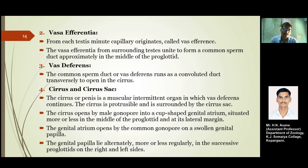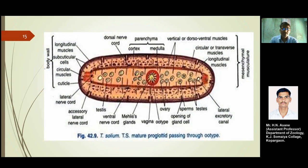The genital atrium opens by the common gonadopore via the swollen genital papilla. The genital papilla lies alternately, more or less regularly, on the right and left sides in successive proglottids. As seen in the mature proglottid cross-section, you can identify the lateral nerve cord, accessory lateral nerve cords, and the testes highlighted as yellow rounded structures.